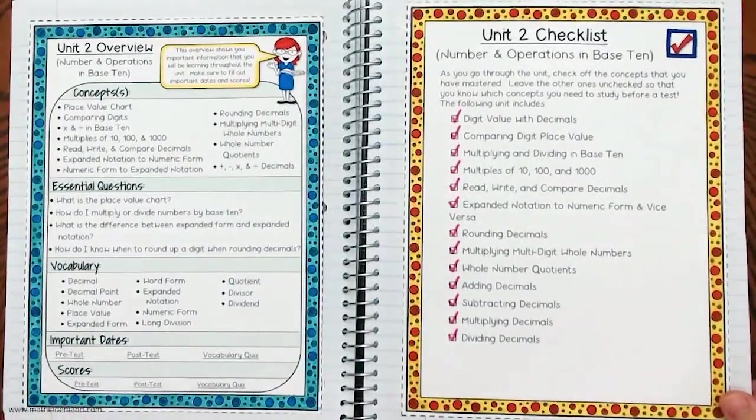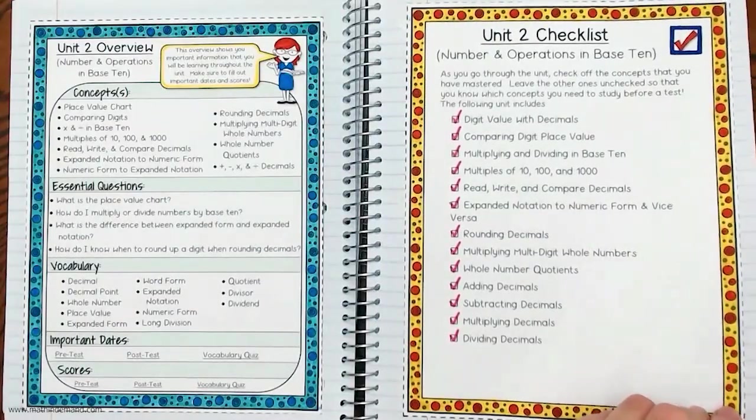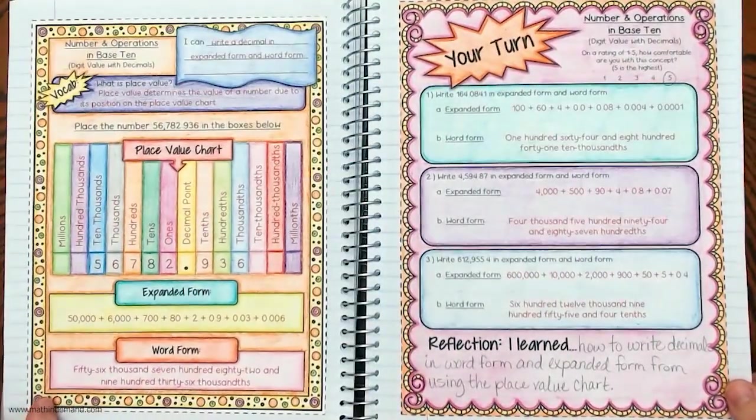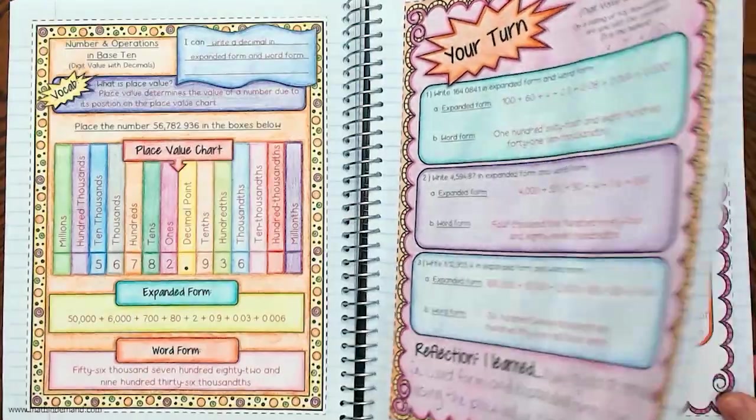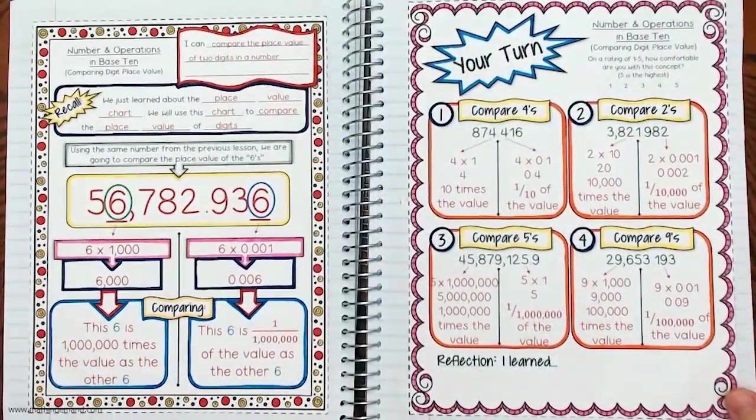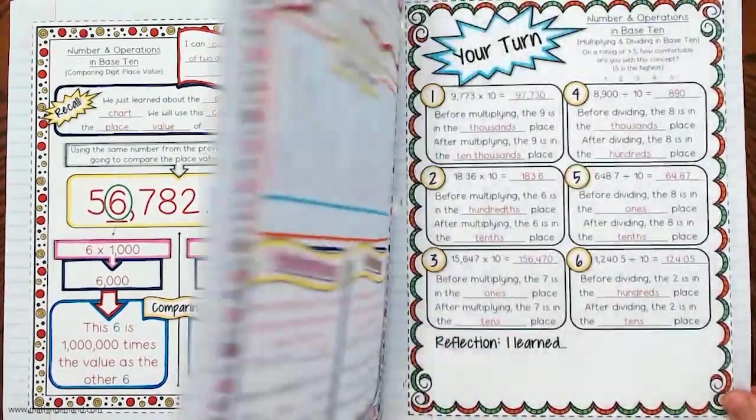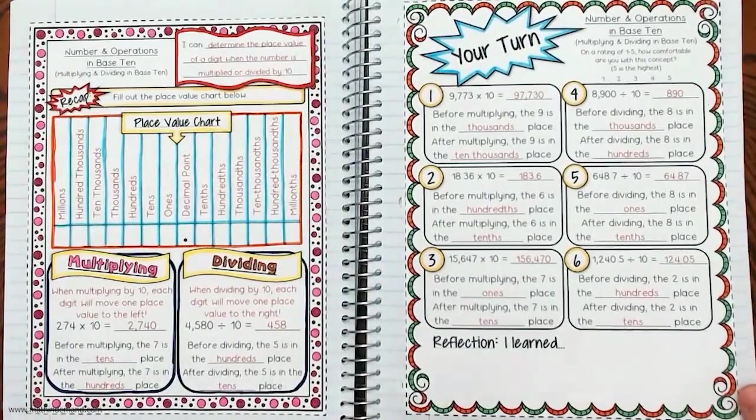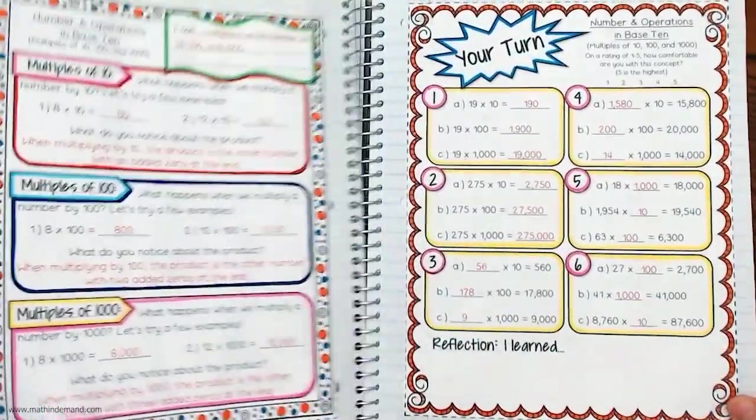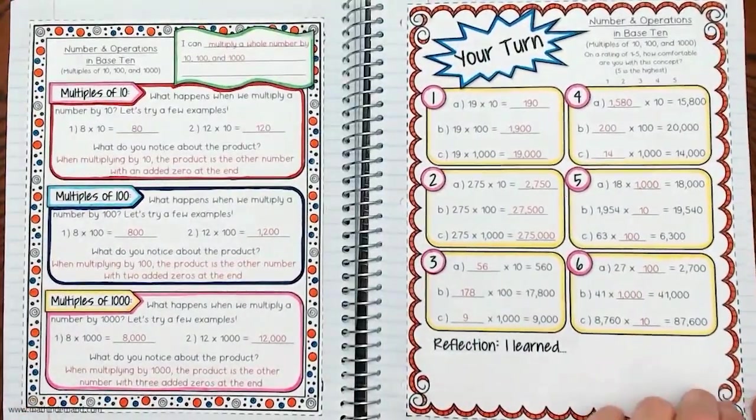Unit two is on numbers and operations in base ten. Students will be learning about digit value with decimals, comparing digit place value, multiplying and dividing in base ten, and multiples of ten, a hundred, and one thousand.